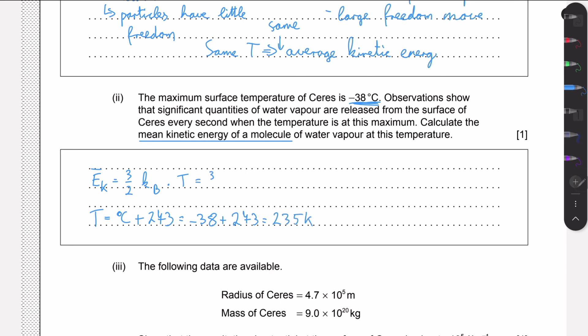Then we just plug in. This is 3 over 2 times 1.38 times 10 to the minus 23 times 235. This will be 4.9 times 10 to the minus 21 Joules. That's pretty much it.